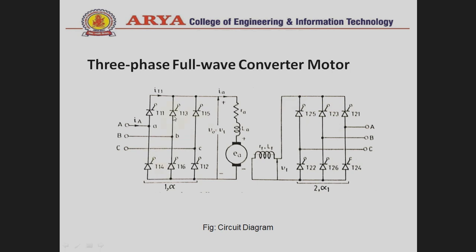In the full converter, we do not use a freewheeling diode because we connect six thyristors to the bridge circuit. That is why we do not use a freewheeling diode in this converter.